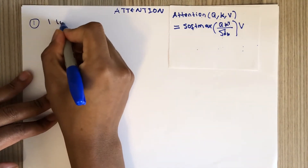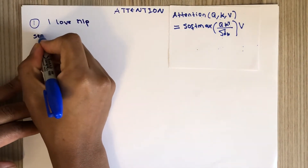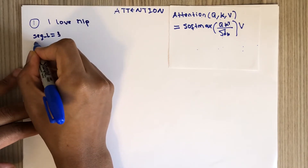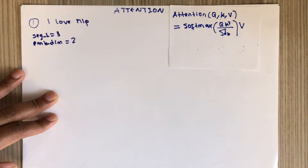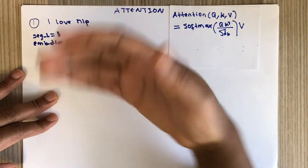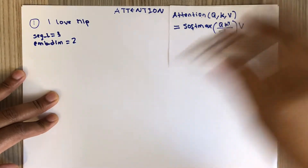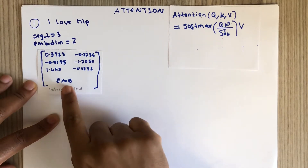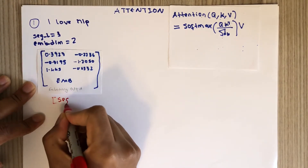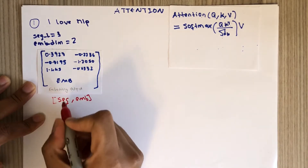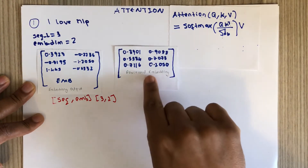Our example sentence is 'I love NLP'. The sequence length L is 3, and we'll use an embedding dimension d of 2. We first put the words into an embedding layer, which gives us a matrix of dimension sequence length by embedding dimension — that is, 3 by 2.